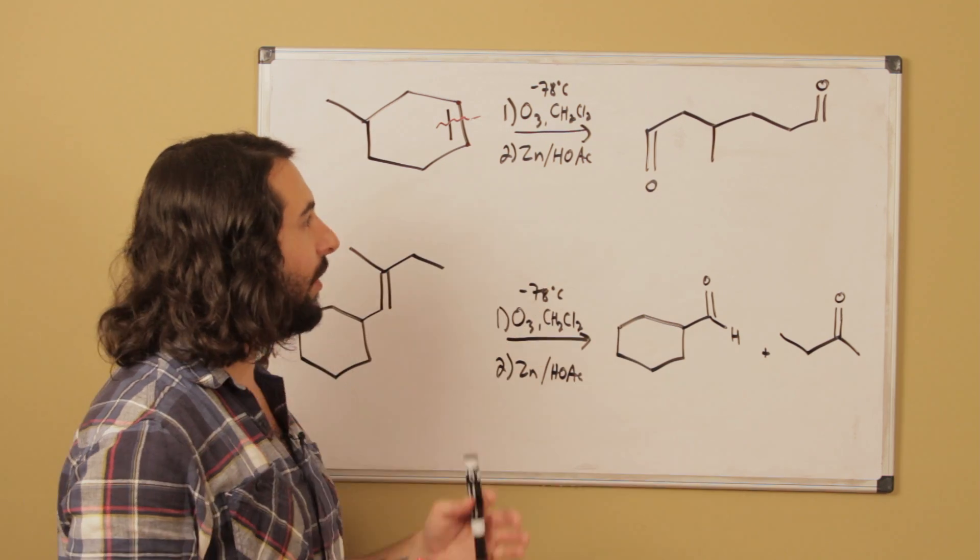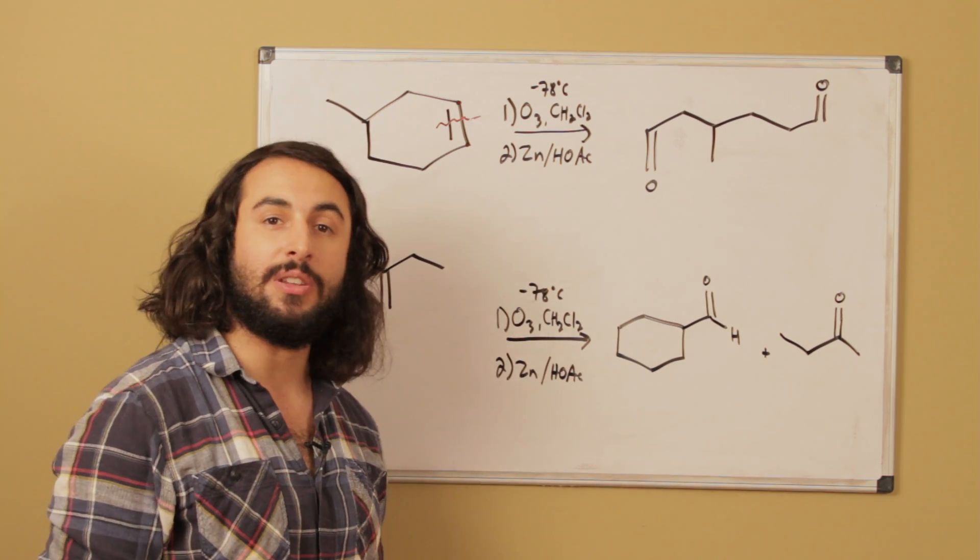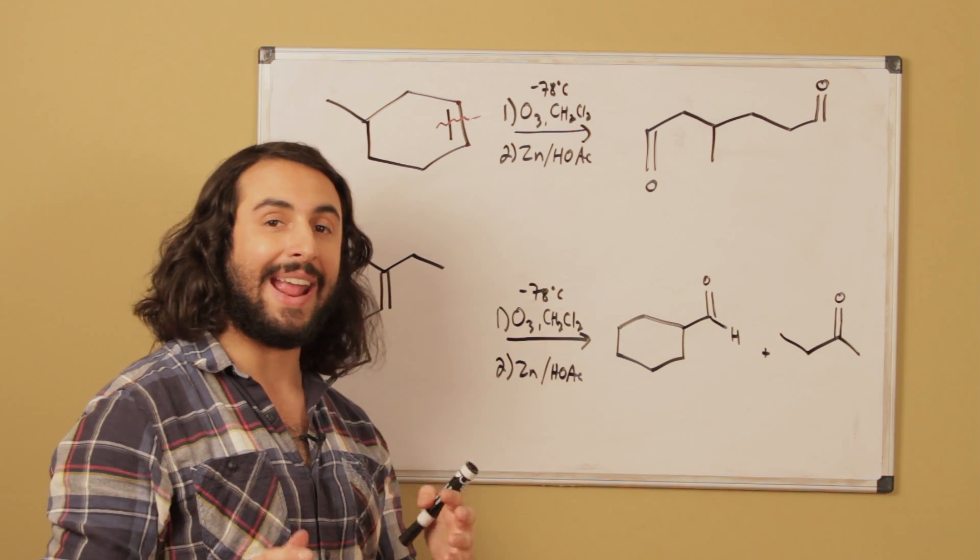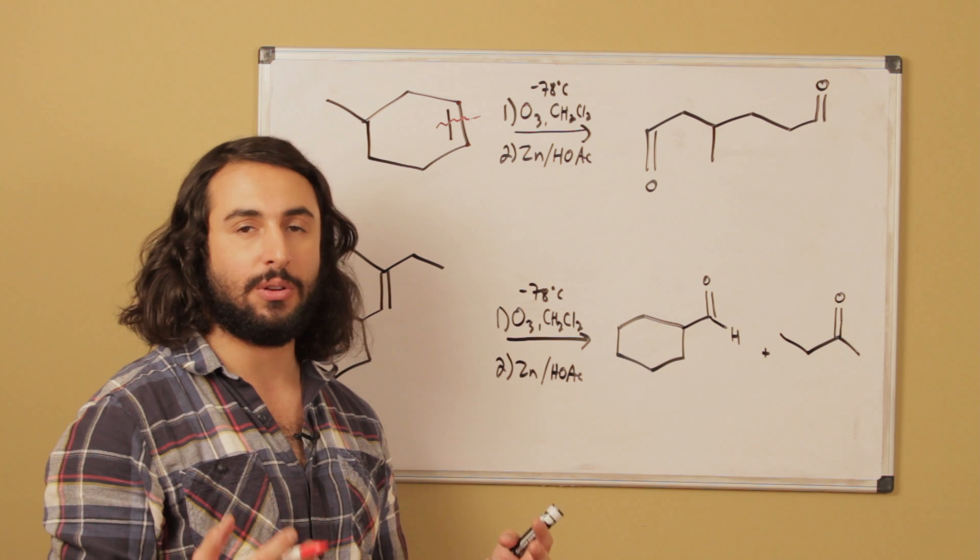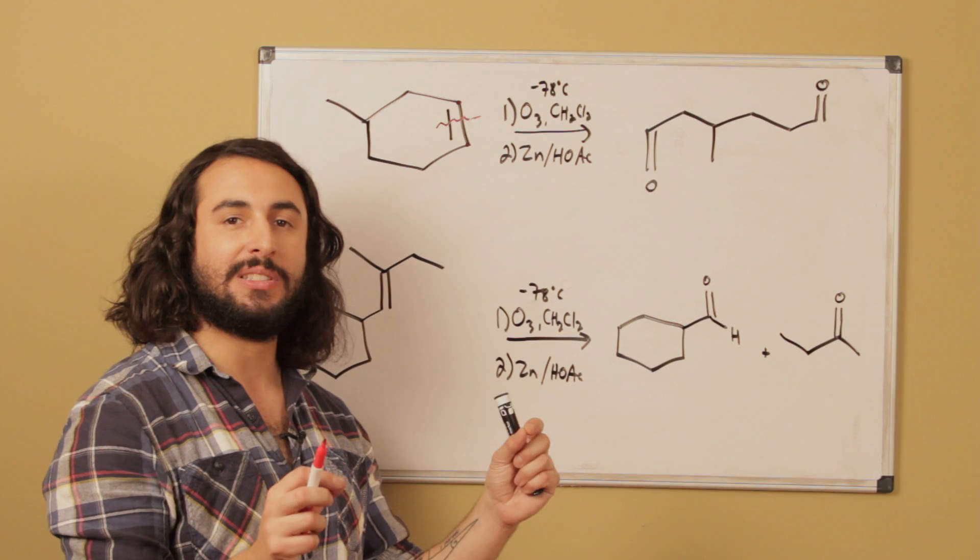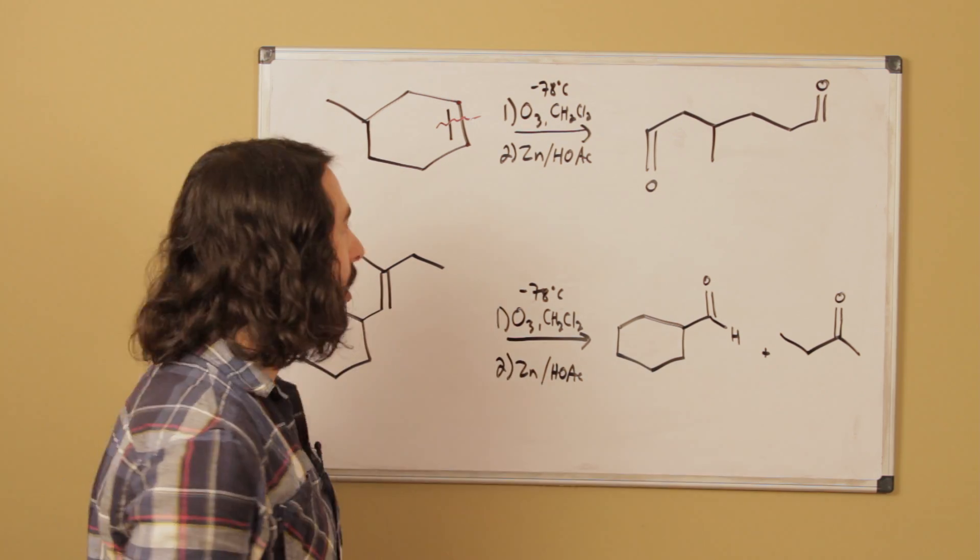In the forward direction, sometimes it can be useful to number your carbons just to make sure that you don't lose or gain any carbons, because that's not what is going to happen. We're not adding or losing any material, we are just transforming carbons that were in a double bond into carbonyl carbons.